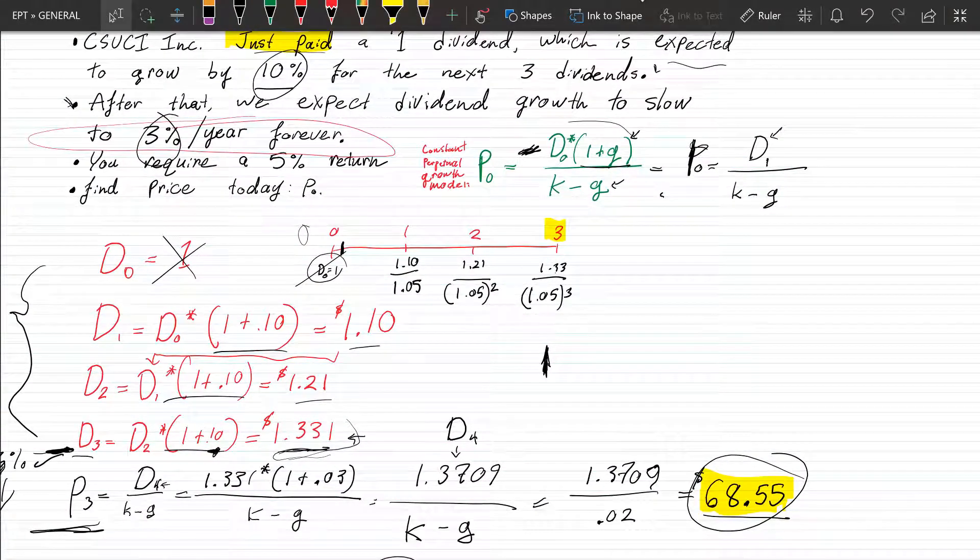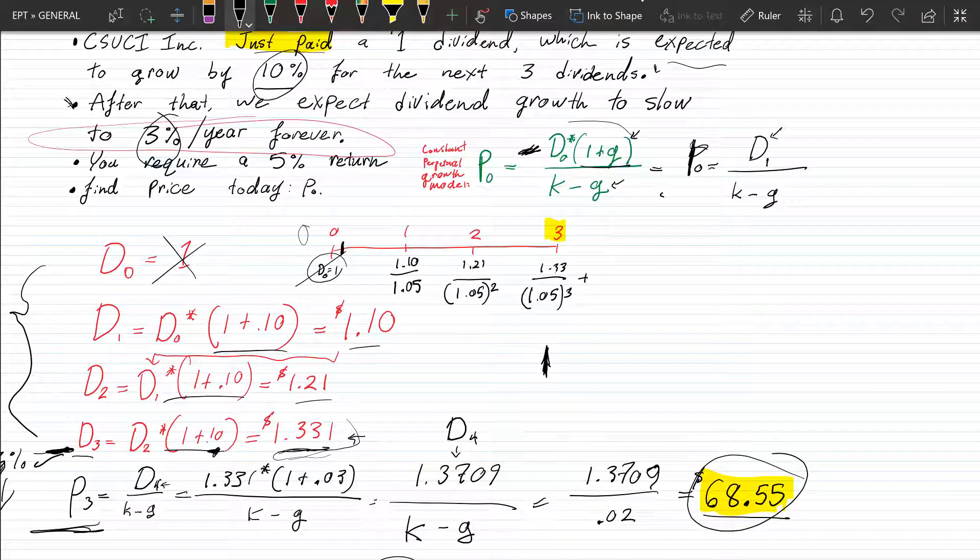So we will effectively add it to this last dividend payment here as a value that is discounted. So we're going to go 68, 55, and we're just going to discount it again by the same term. Remember, 1.05, it's still in the same period. So we're still going to discount it by 1.05 to the third power.